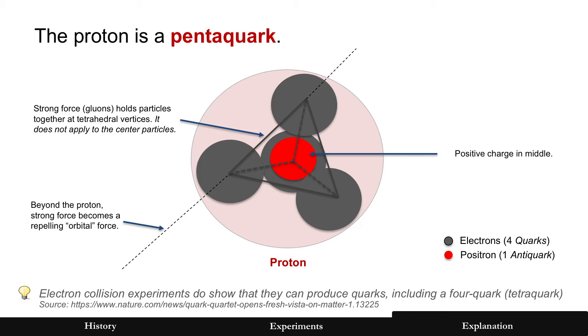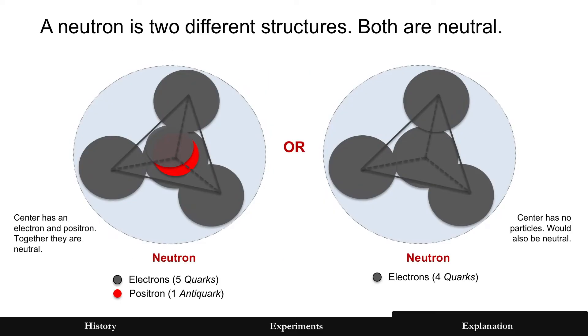But here's the model. The four quarks of the tetrahedron are very strong interactions, and that's what you call the strong force. Beyond it, it's repelling, but only on an axis. However, the positron in the middle is positively charged and what attracts an electron. That's the model of the pentaquark. I'll explain it in a second with matching all the experiments, but first the neutron.